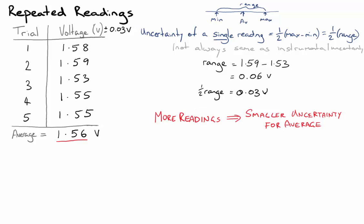And so what we do, instead of doing what we did up here, where we took the uncertainty of a single reading, what we're going to do is say that the uncertainty of the average value is the same as that half range, but then we're going to divide it by the square root of the number of readings that we took. And this means that the more readings we take, the smaller that uncertainty is.